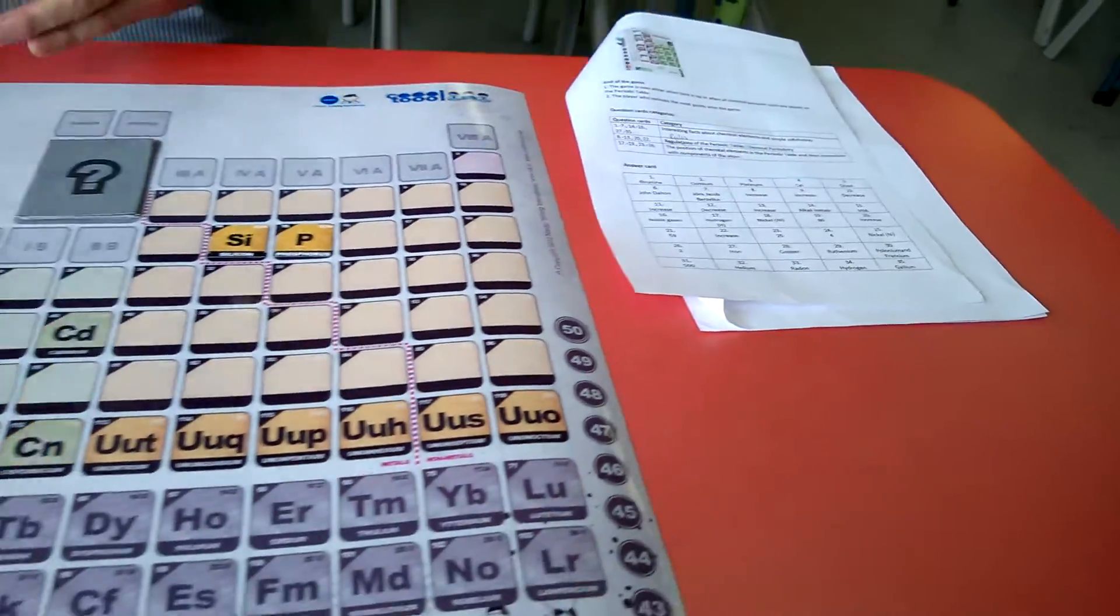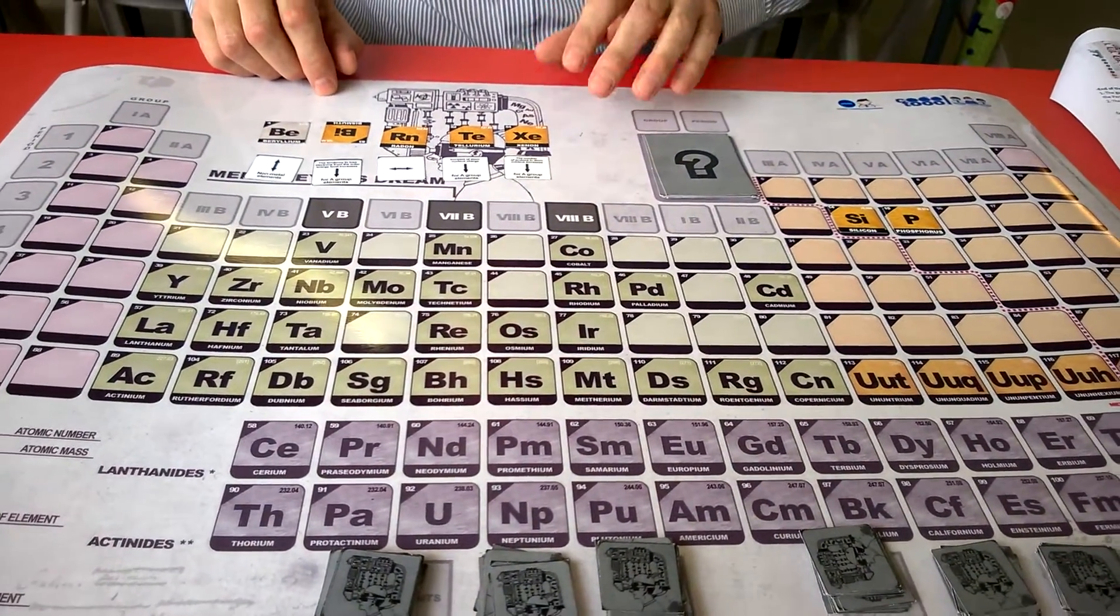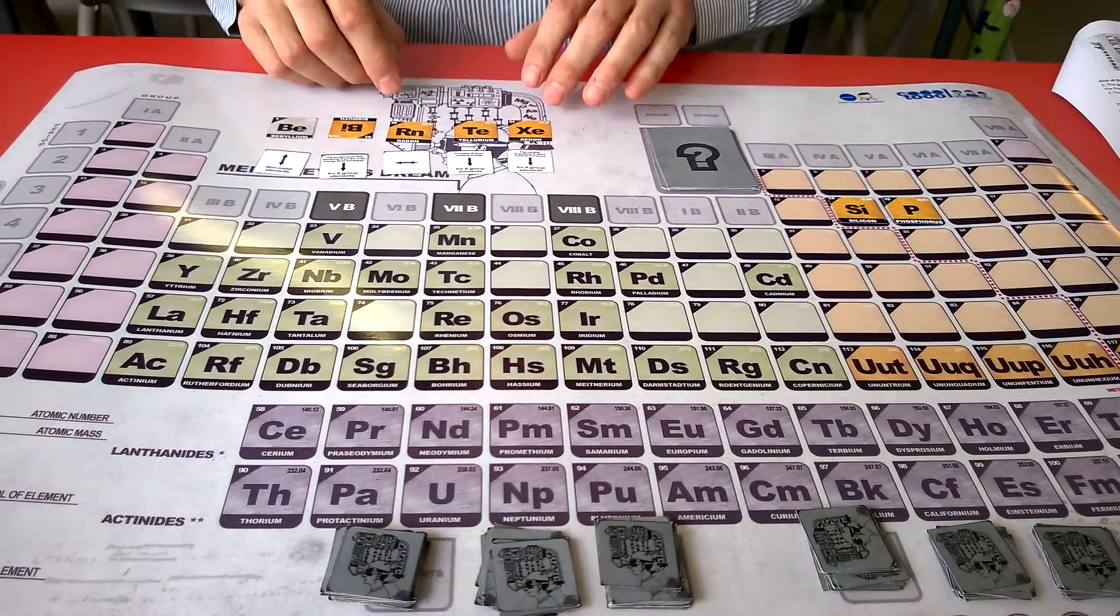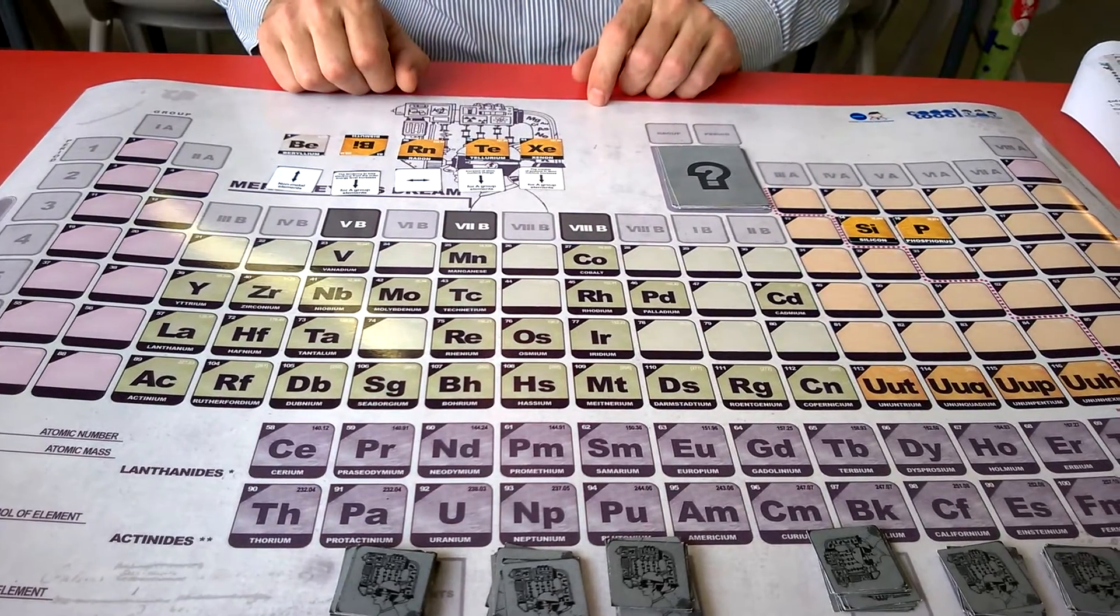So the game proceeds with each player taking a turn and they can place at the most three cards in any one turn but each card can only be placed if it is backed up with a correct direction card.